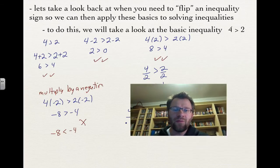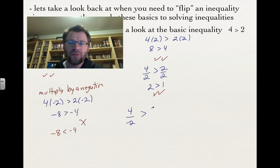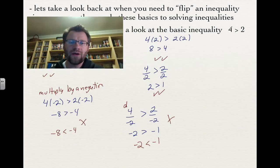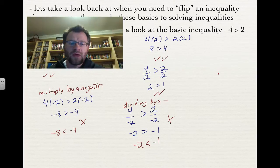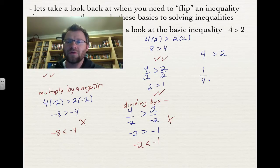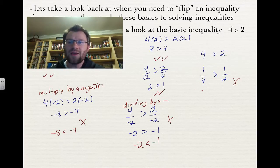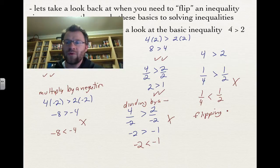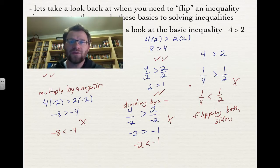Our second case is if we divide by a negative. If we take 4 divided by negative 2 and 2 divided by negative 2, we get negative 2 is greater than negative 1 — also not true, so we'd have to flip the sign. Dividing by a negative is the second way we have to change the inequality sign. Our final case is if we take the reciprocal of both sides. With 4 is greater than 2, flipping both sides gives a quarter is greater than a half — not true. So it must be quarter is less than a half. That's when we have to change the inequality sign from greater than to less than, or vice versa.